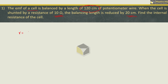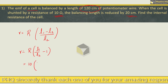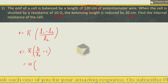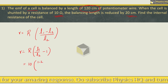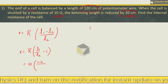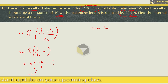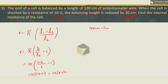This is a simple formula: the internal resistance r is equal to R times (L1 minus L2) upon L2, or equivalently r = R times (L1/L2 minus 1). Capital R is the shunt resistance given as 10 ohm. L1 is the initial length of 120 cm, which is 1.2 meter. The length decreased by 20 cm, so it became 100 cm, which is 1 meter. So this will be 10 into (1.2/1 minus 1), which is 10 into 0.2, giving 2 ohm. We got the internal resistance as 2 ohm.